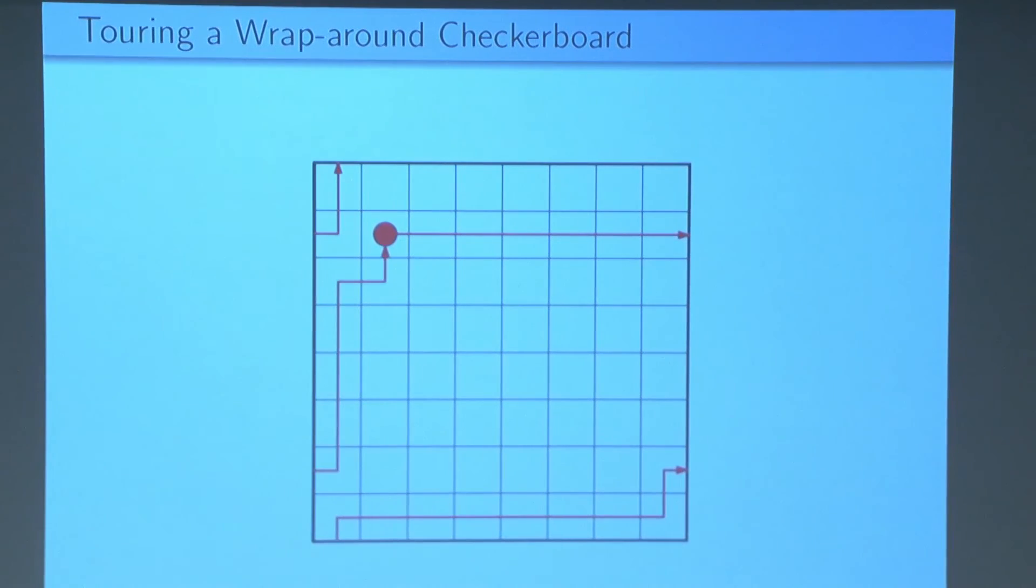Hit the right boundary again, return to the left, and then return to where it started. So this is not a Hamiltonian cycle because it does not visit every cell of the checkerboard exactly once, but it is a feasible path for the checker to travel in.